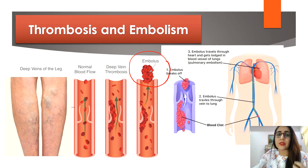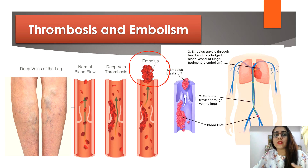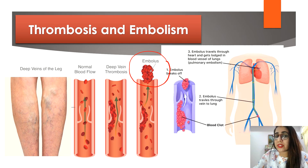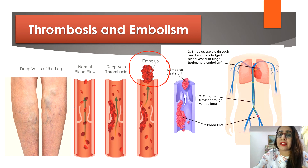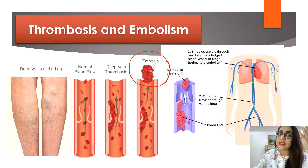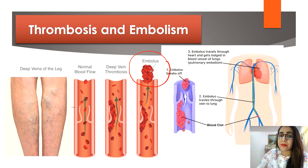A blood clot blocked in an artery prevents blood flow and stops oxygen supply to surrounding tissues. If a blood clot forms in the coronary artery, the cardiac muscle may be damaged and cause a heart attack. If a blood clot prevents blood flow to the brain, a stroke may occur and the victim may be paralyzed.